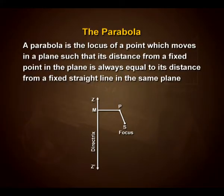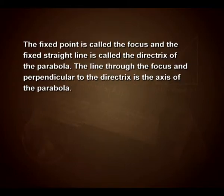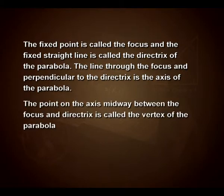A parabola is the locus of a point which moves in a plane such that its distance from a fixed point is equal to its distance from a fixed straight line in the same plane. The fixed point is called the focus and the fixed straight line is called the directrix. The line through the focus and perpendicular to the directrix is the axis of the parabola. The point on the axis midway between the focus and the directrix is called the vertex of the parabola.